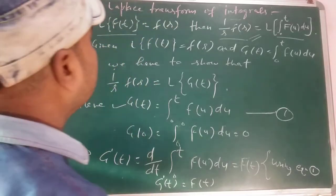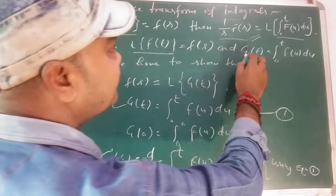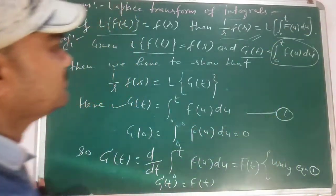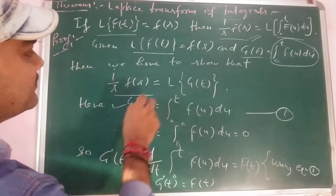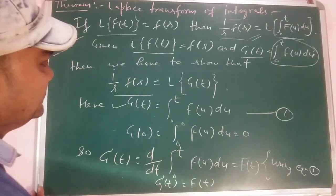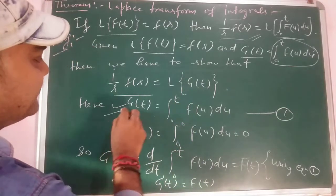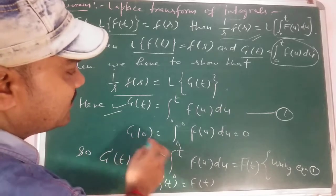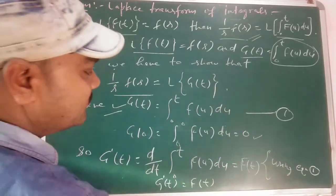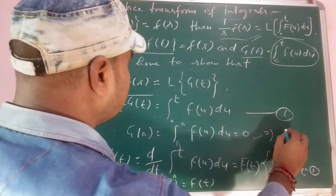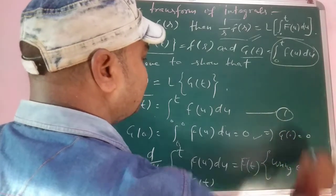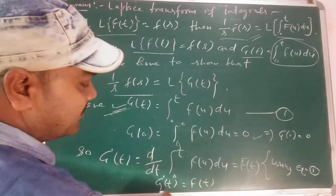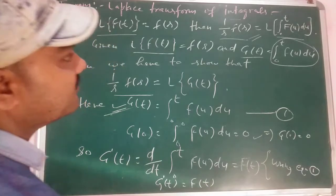So up to here, what we did: we took g(t) = ∫₀ᵗ f(u) du as the new function for the integral term. We had to show (1/s)·F(s) = L{g(t)}. We found g(0) = 0 because the limits become 0 to 0. Then we took the time derivative and got g'(t) = f(t).